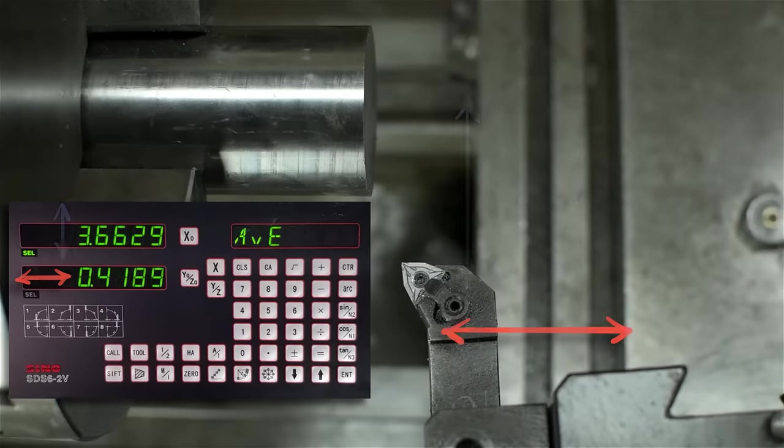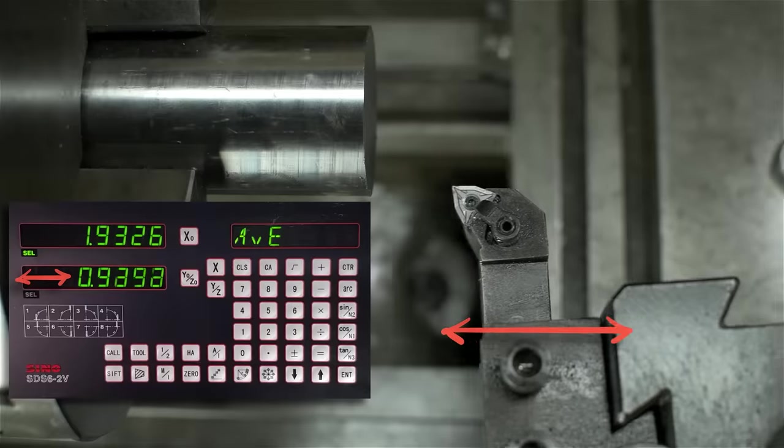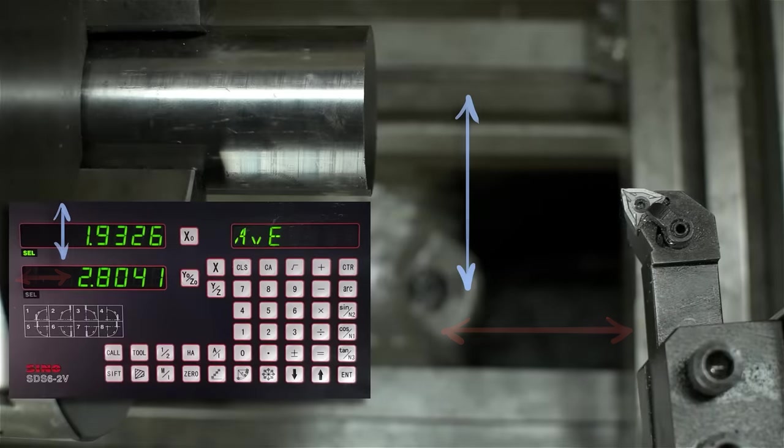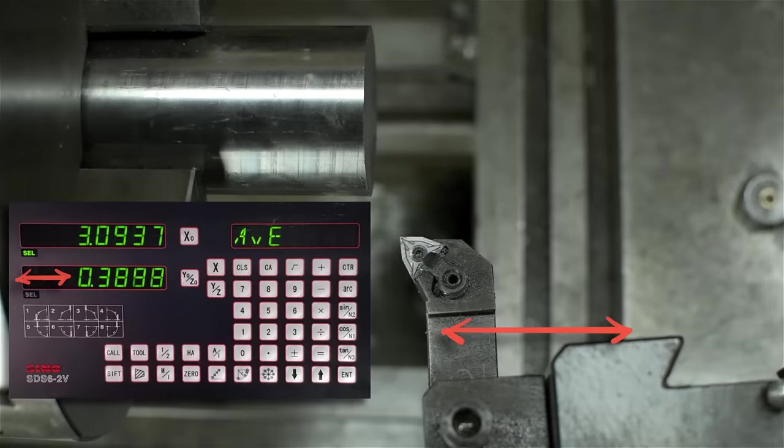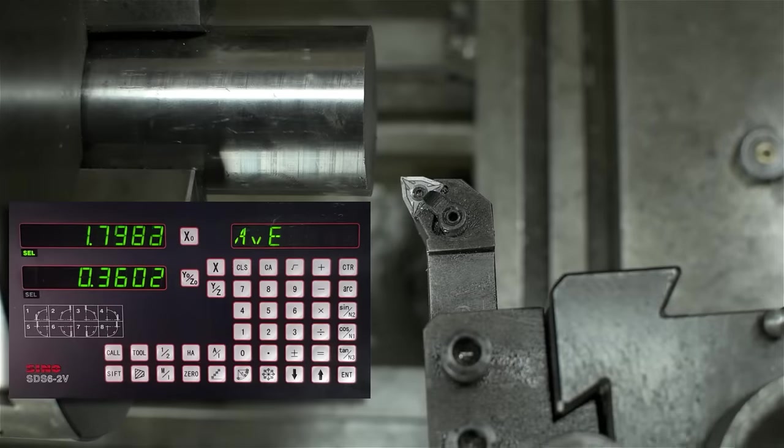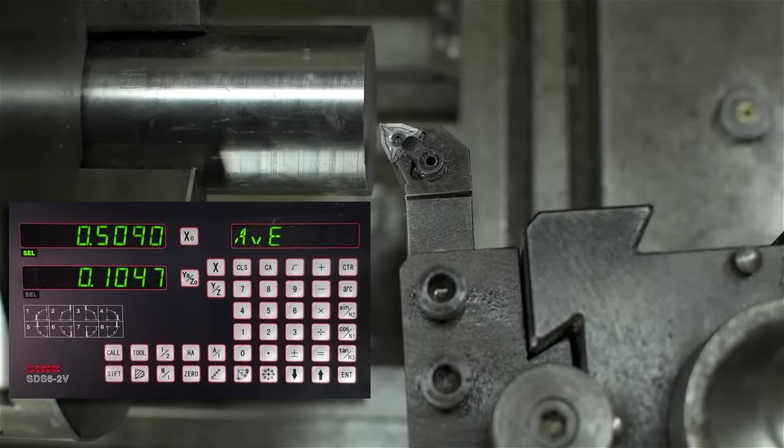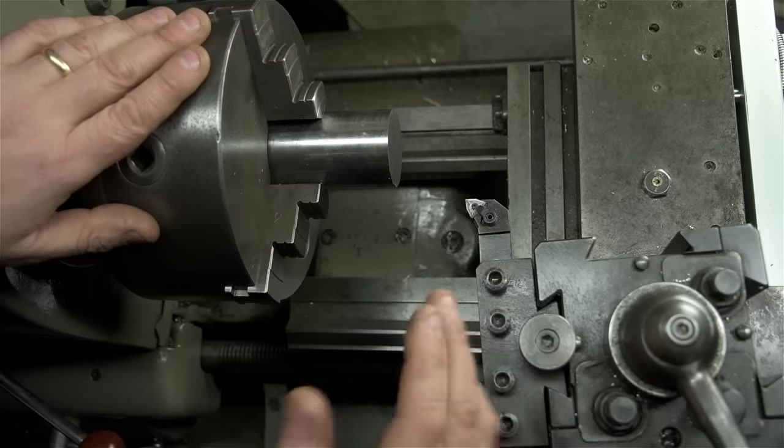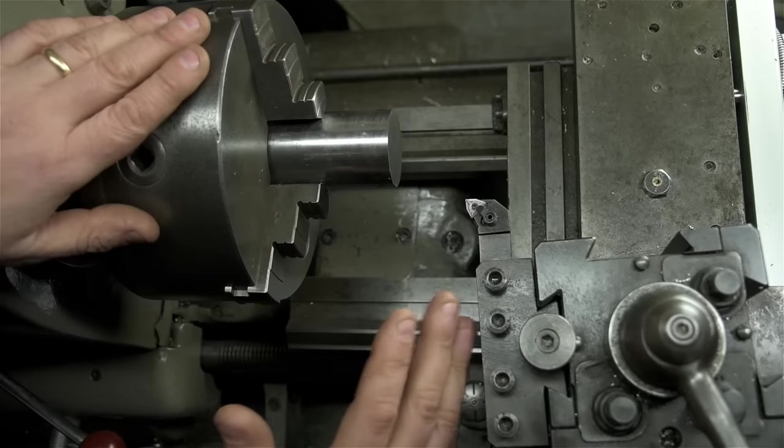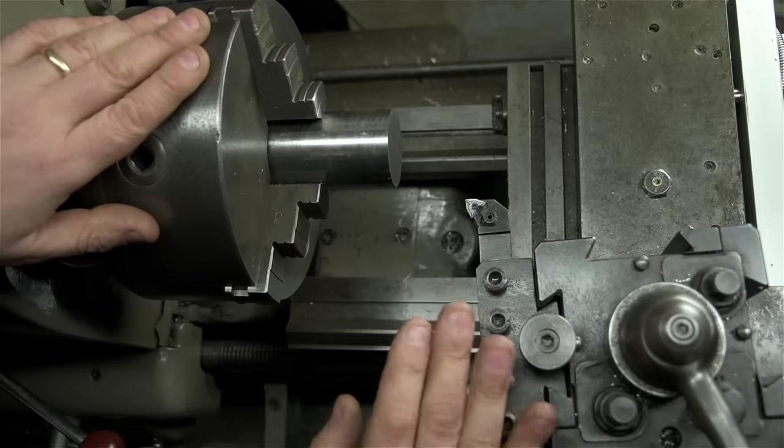The whole point of a digital readout is to give you constant positional feedback about where your tool is in relation to your work. You still need your micrometers and slide rules to make good parts, but this speeds everything up, not having to keep track of how many turns you're making on the handwheel. You can get a lot closer to finished dimension faster than you likely could without one.